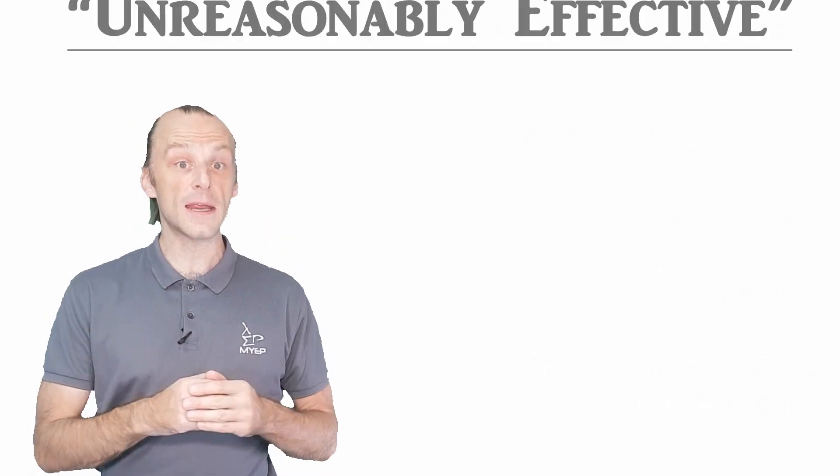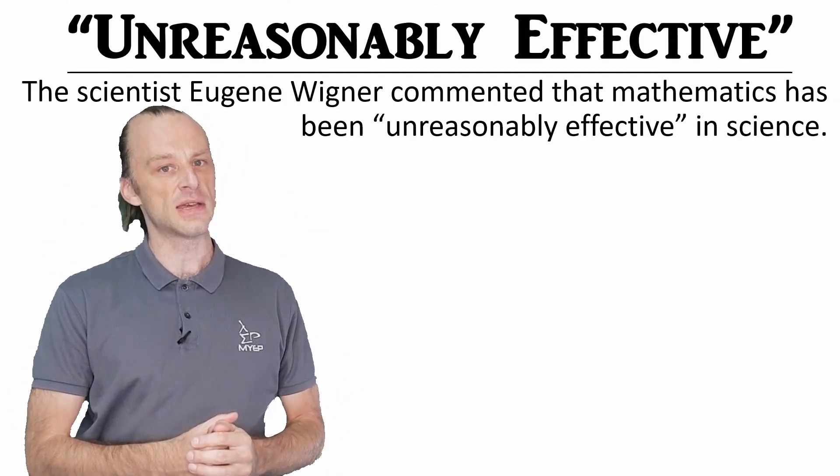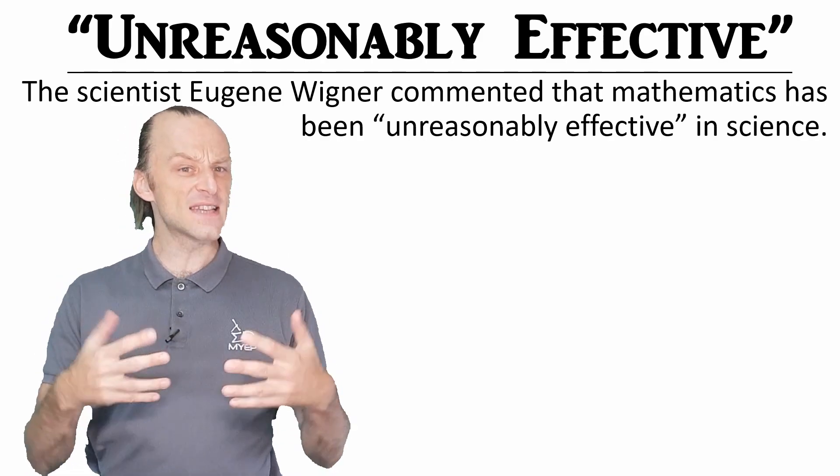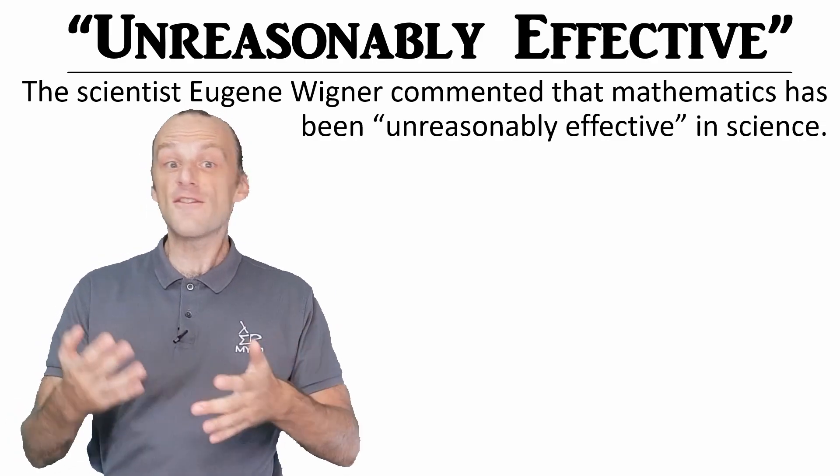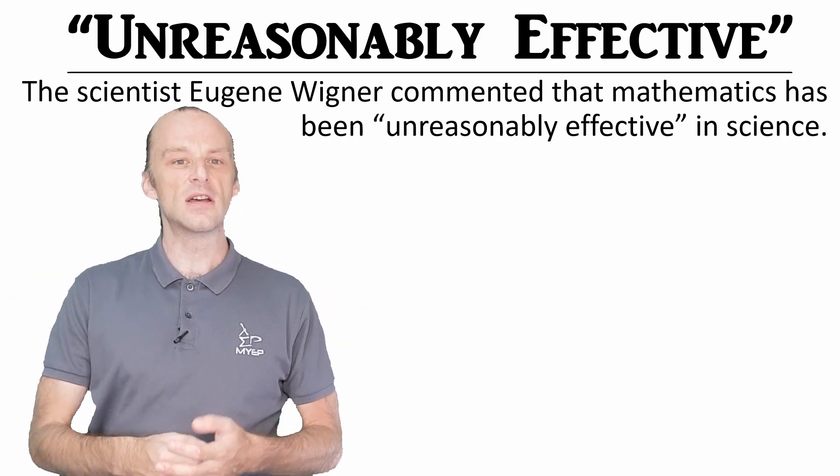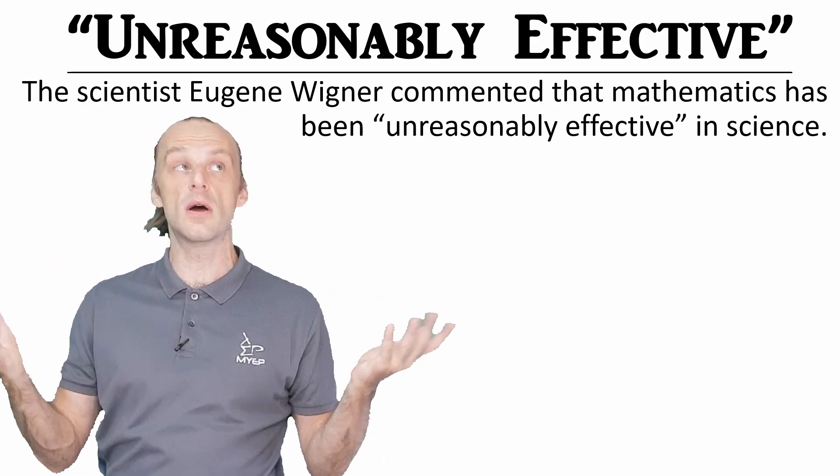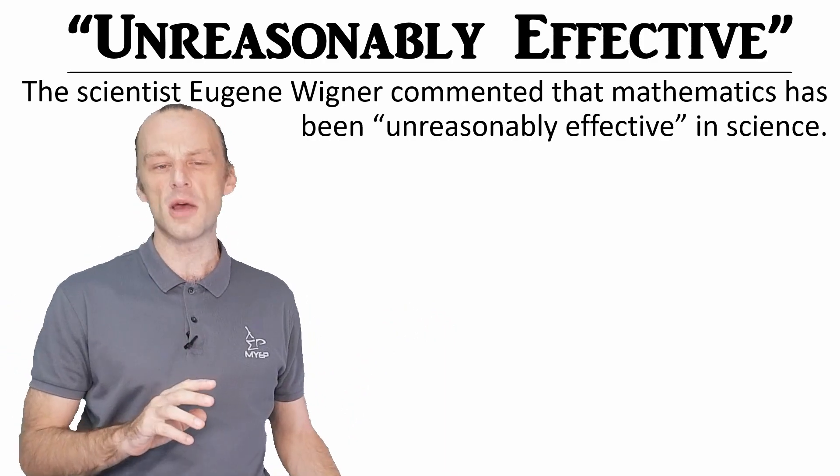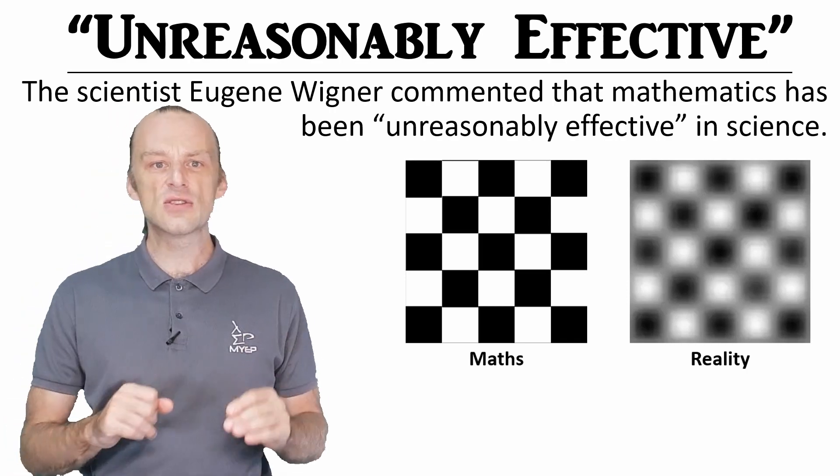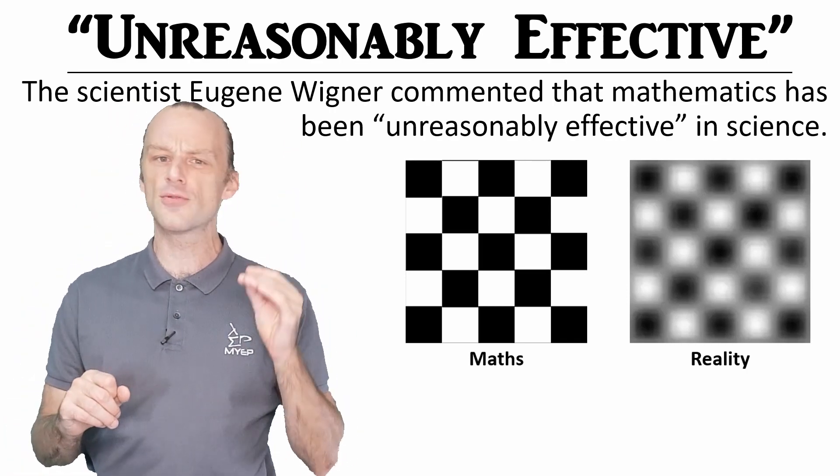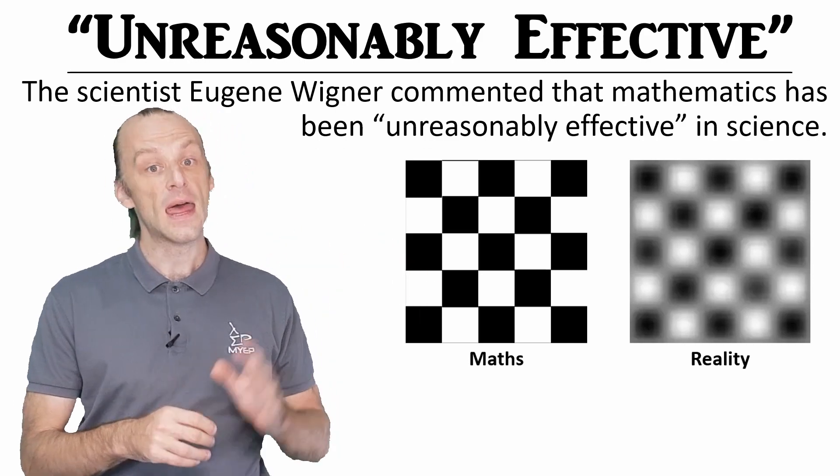The scientist Eugene Wigner commented that mathematics is unreasonably effective in science. What he means is it is far better at fitting with reality than we might expect. Everyday life is usually chaotic and unpredictable. Something as precise as maths that works in understanding the world around us is actually quite surprising. This is often shown in this diagram. Maths draws lines which are far too sharp for the real world, but we can see the same form in both images.